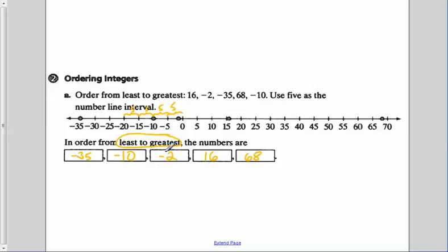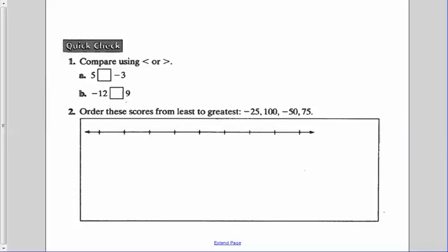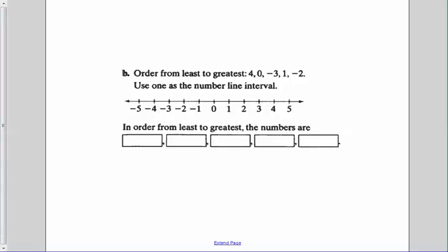So 68 would be the greatest, followed by 16, negative 2, negative 10, and negative 35 is the least. Here's where I'm going to give you a chance to practice. We'll check here in a second. Before we do that, we have another example we have to work through. You already have that part done, but it just copied out of order.